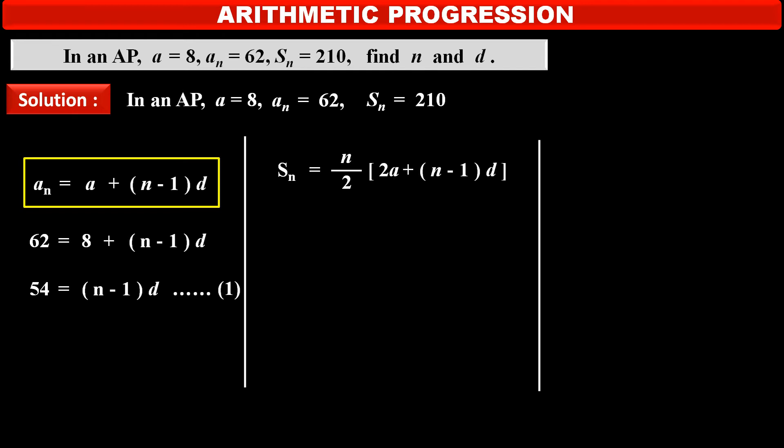Now, we have to apply formula of sum of N terms SN which is equal to N upon 2 in bracket 2A plus N minus 1 into D.